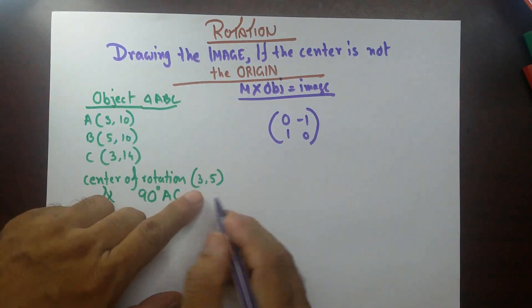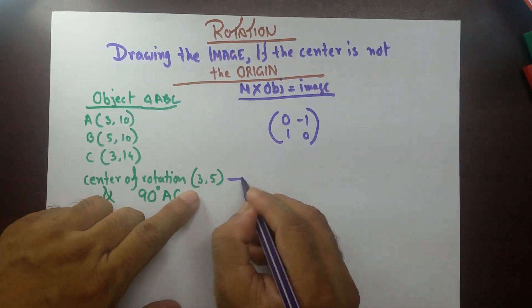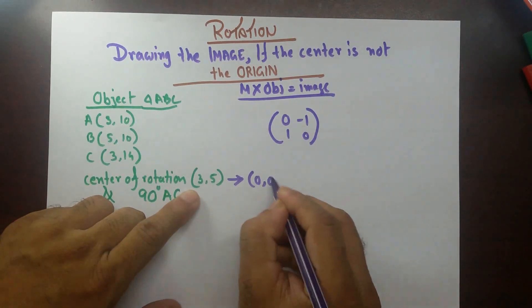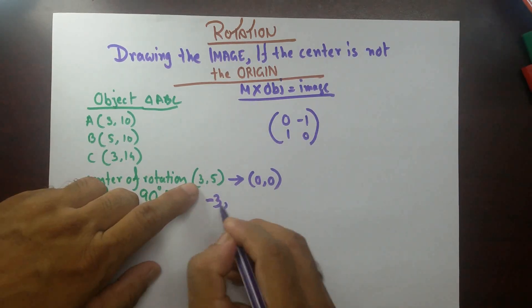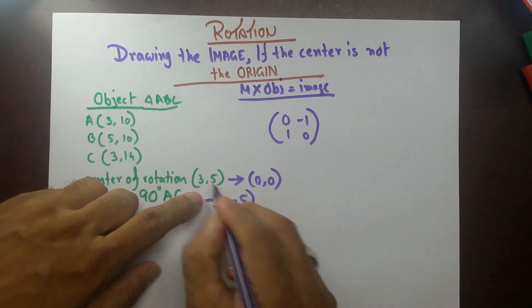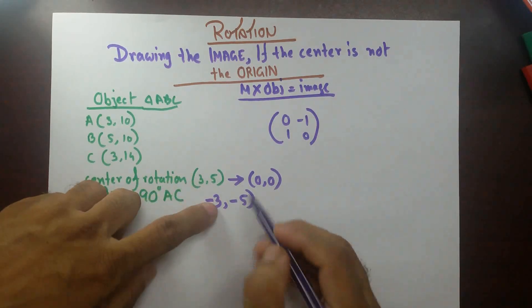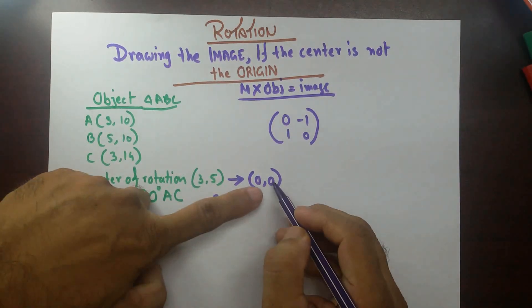What do I mean by that is, to make this one 0,0, I need to subtract minus 3 from the x coordinates and minus 5 from the y coordinates. So, 3 minus 3, that's 0, 5 minus 5 is 0.